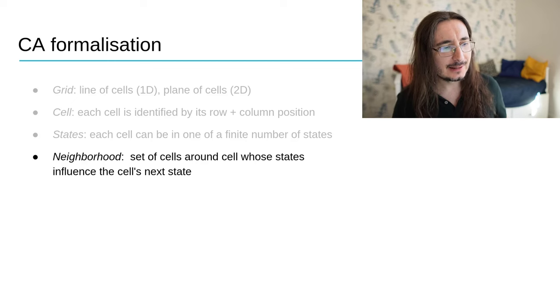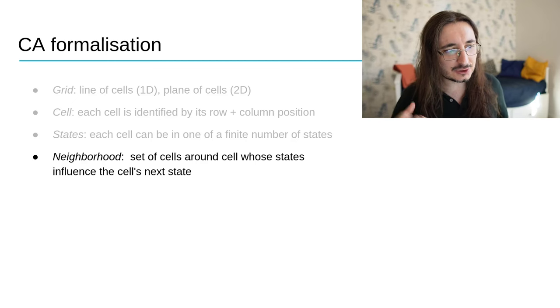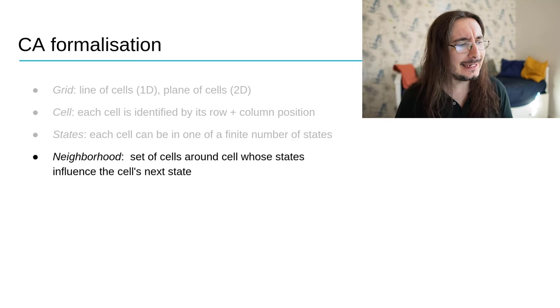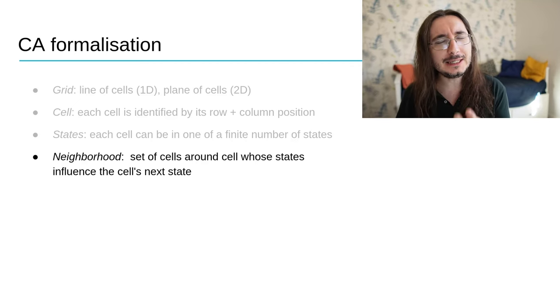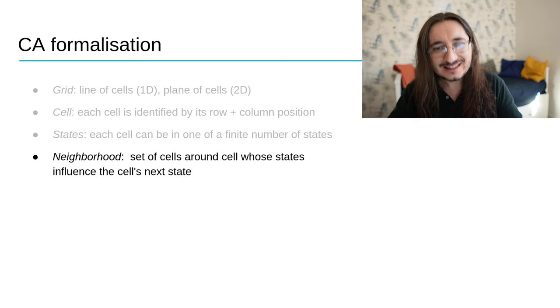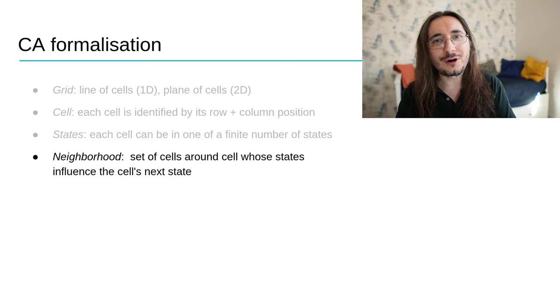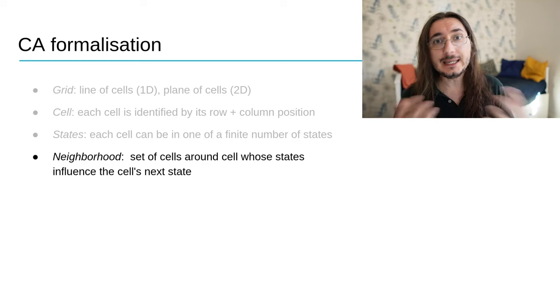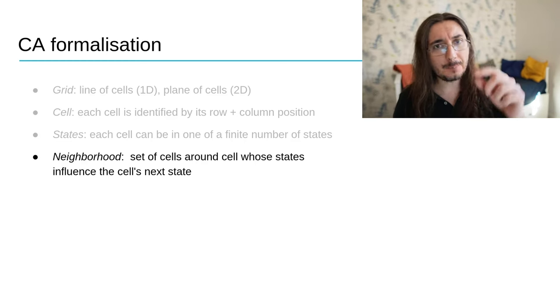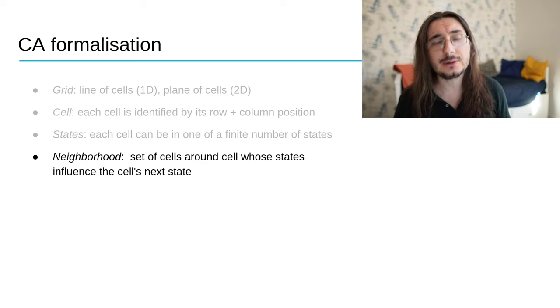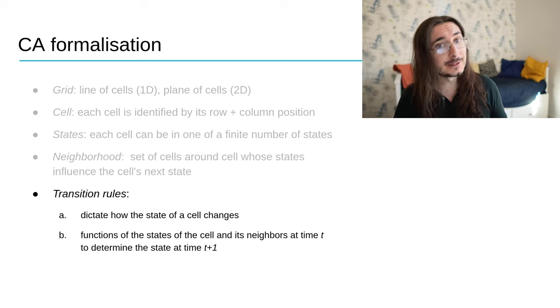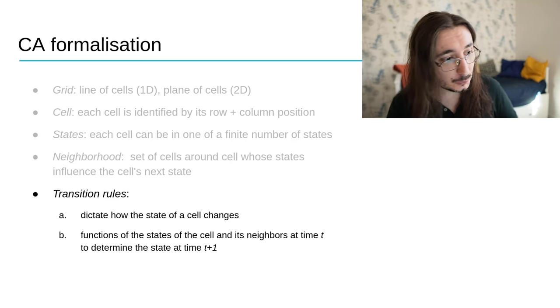Then we have the neighborhood. That is the set of cells that surround a cell that you are analyzing at a certain point in time. And the point about the neighborhood is that it is particularly important because it affects the evolution of the cell that you are analyzing. There are different ways of defining neighbors for a cell. Typically, you would get the up and down left and right neighbors, but you can also get the diagonal neighbors.